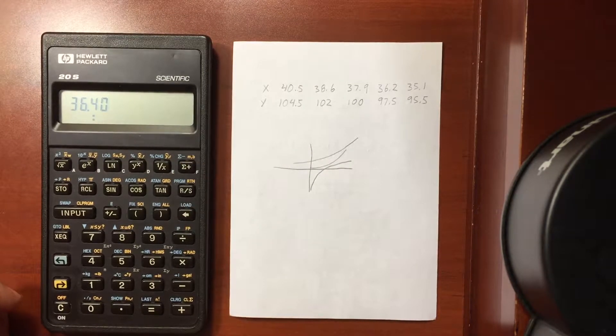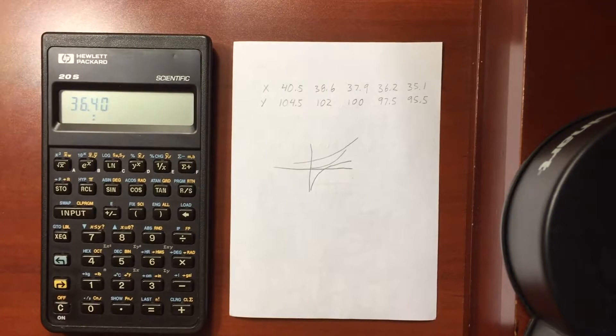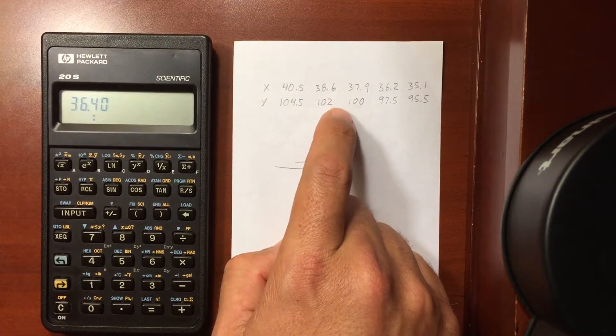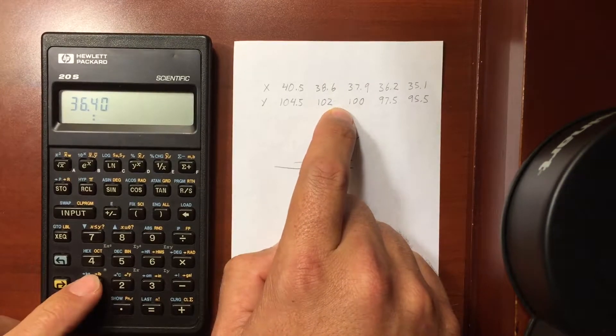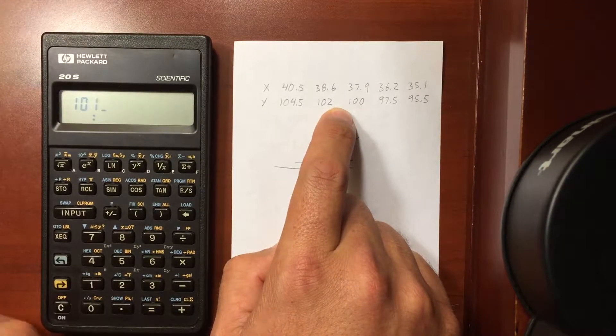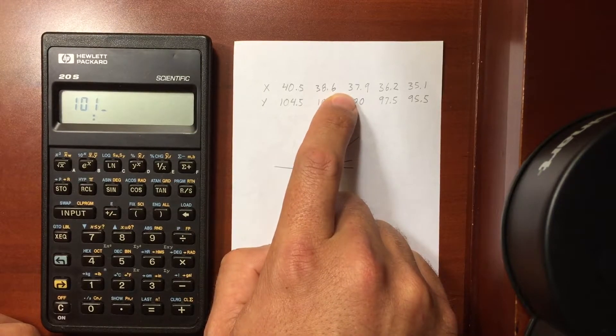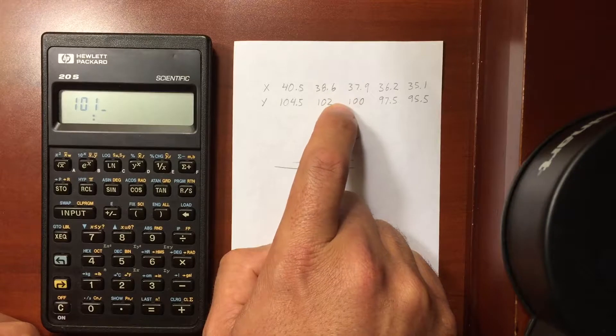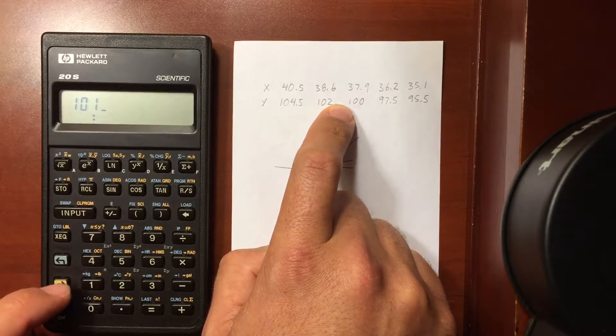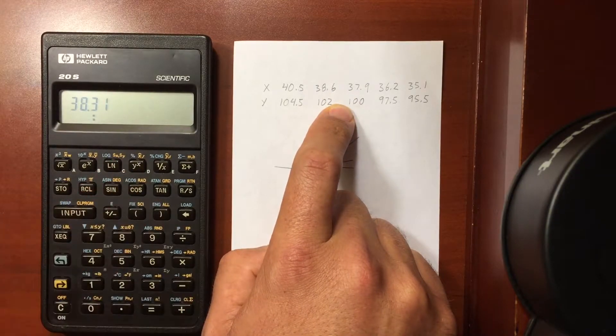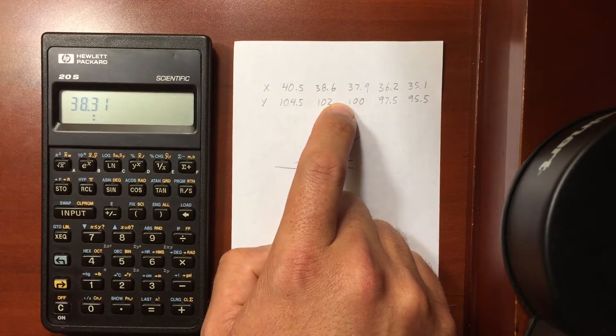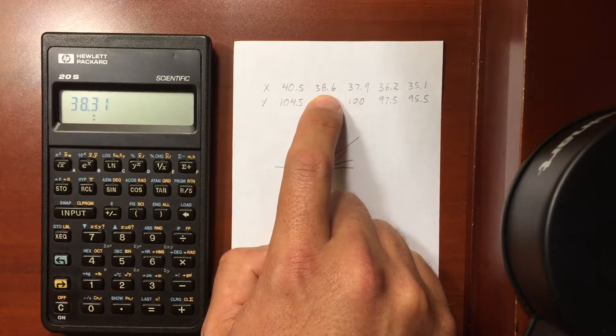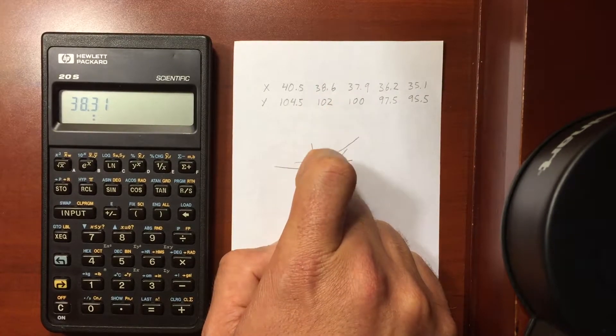I can also, based off that linear regression, find a predicted value. Say I want to find 101, so I enter in 101 and I want to find out what X value would correspond to a Y value of that given my linear regression. So I do that and it says that 38.31 would give me a Y value of 101, and it does fall between the 38.6 and the 37.9.